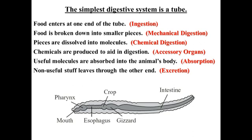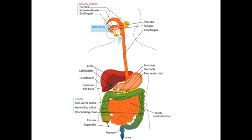We're going to see that this simple digestive system has the same types of functions going on. What we'll be looking at in the next podcast is exactly what happens at each of these organs. This has been Vodcast 7 for Honors Biology at Desert Ridge High School. I'm Mr. Galladay, and I hope you have a great day.